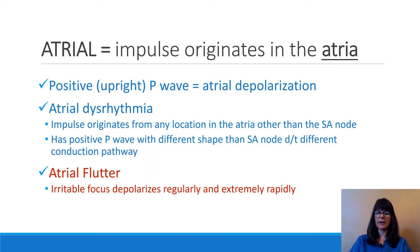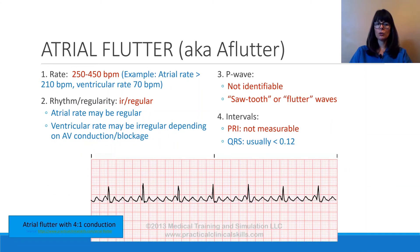Particularly in atrial flutter, the irritable focus depolarizes very regularly and extremely rapidly. For atrial flutter, the first rule is to determine the rate. The atrial rate is usually quite high, at 250 to 450 beats per minute. Remember that is the atrial rate only — the ventricular rate would probably be a little bit different.